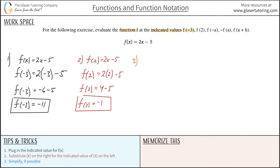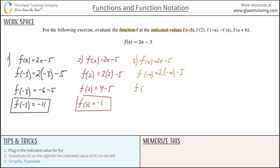The next one says f of negative a. Start with the original: f of x is equal to 2x minus 5. Now it's going to be f of negative a — we substitute f of negative a in for f of x. On the right-hand side, substitute out the x value for negative a. It seems odd because it's a variable in and of itself — it's an unknown — but we follow the process. So f of negative a: we distribute, and this is negative 2a minus 5. There's nothing else to simplify here.